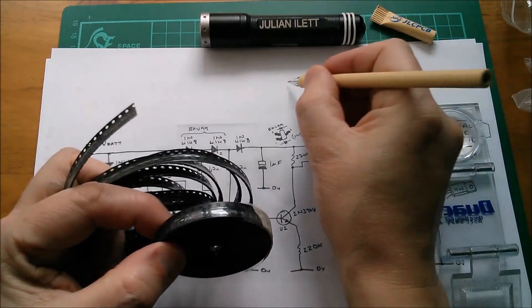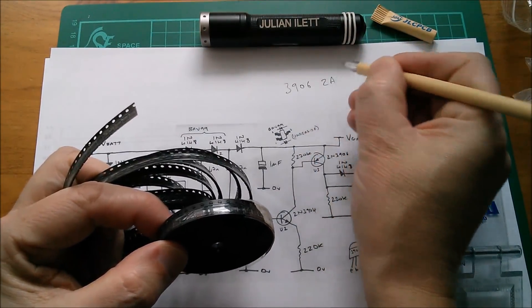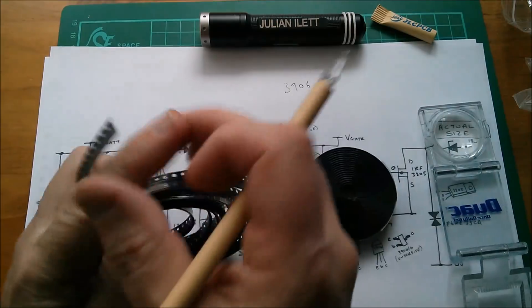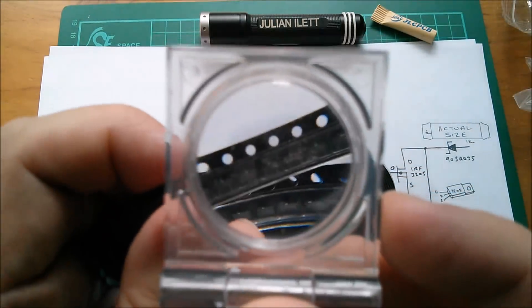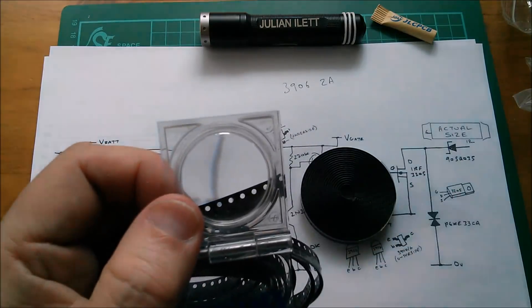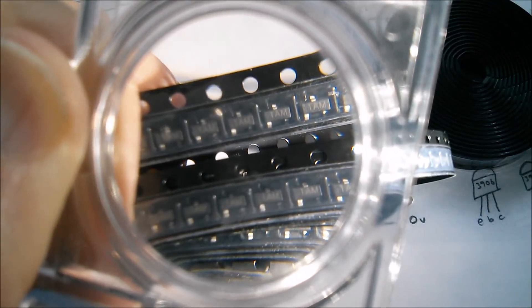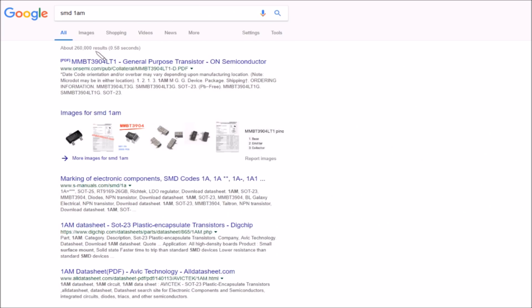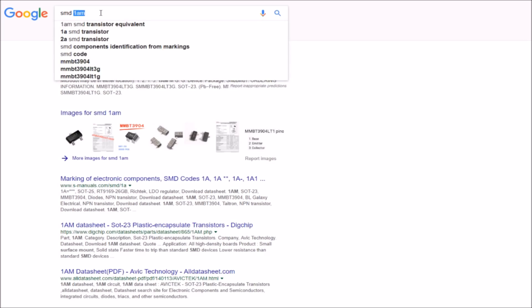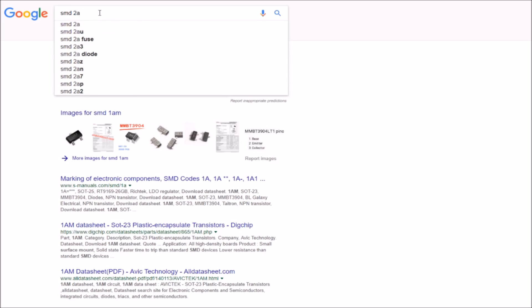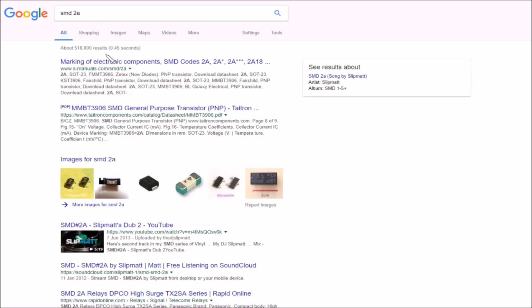And let's just have a quick look at the SMD 3904. I'm not sure whether we're going to be able to see this, I'll zoom in, yeah, this one says 1AM. So let's quickly look those up and just check that they are what I think they are. Yeah, so SMD 1AM immediately brings up the MMBT3904, the other one was 2A, so let's try that. 2A, and yes, there it is, the MMBT3906, so those would appear to be correct.